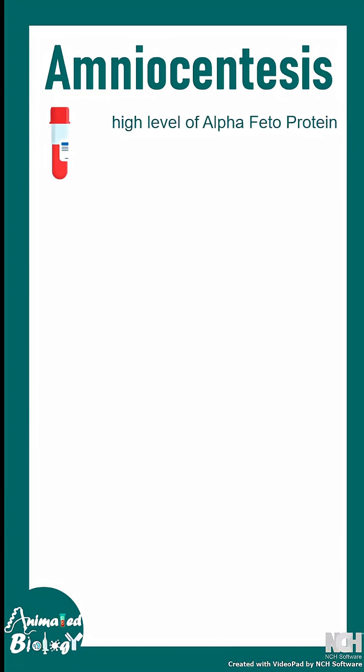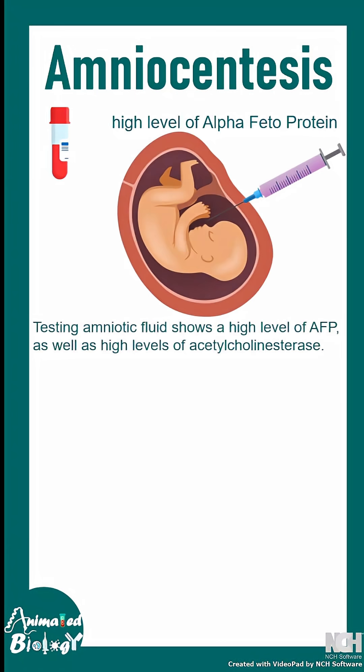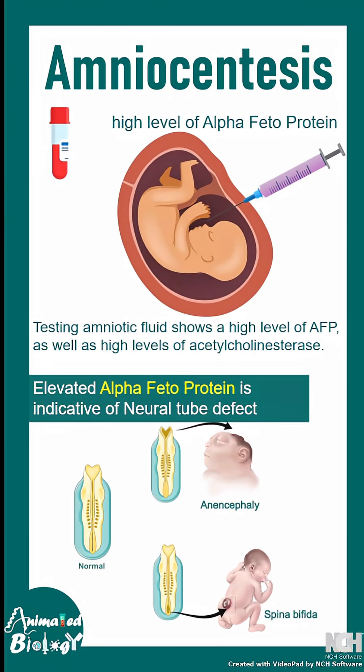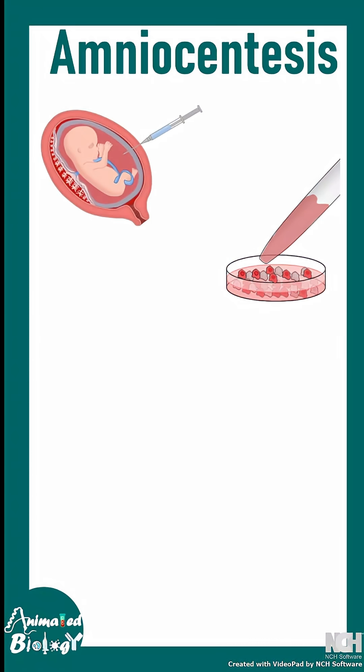There are metabolites in amniotic fluid that could be indicative of several diseases. One such example is alpha-fetoprotein. A high level of alpha-fetoprotein in the amniotic fluid is indicative of neural tube defects like spina bifida.